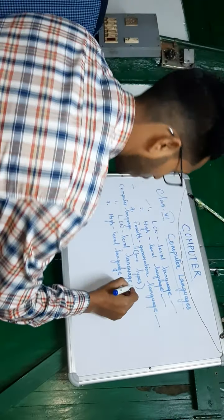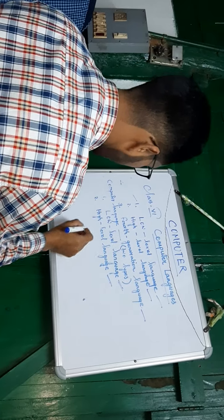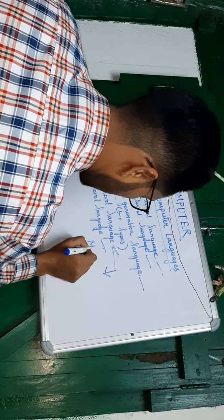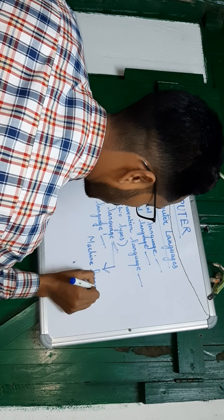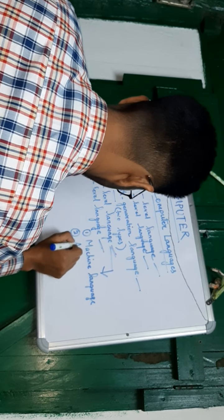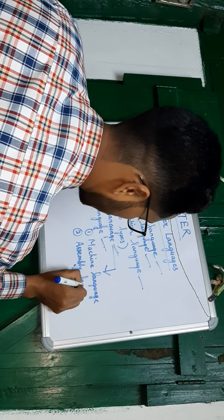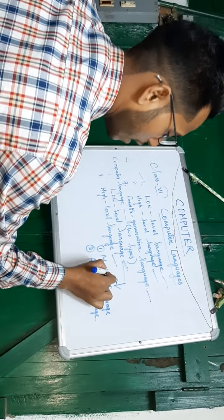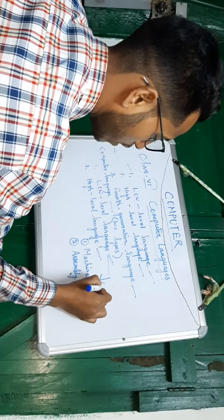Computer languages are of two types: low-level language and high-level language. Low-level language itself has two types: machine language and assembly language. These are the two types of low-level languages that you have to study.